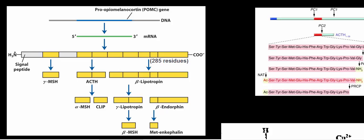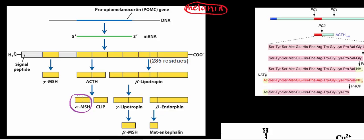Welcome back to the playlist on skin physiology and biochemistry. In the last few videos, we've been talking a lot about melanocytes and how they synthesize melanin, and how melanin is really important for protection of the underlying tissue's DNA. In order for the melanocyte to synthesize more melanin, it has to get the signal from a peptide known as alpha-melanocyte-stimulating hormone, which is released from the anterior pituitary gland, also called the adenohypophysis.